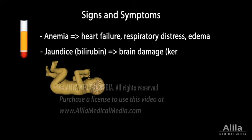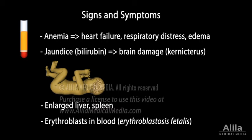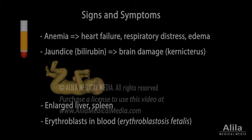Other signs of HDN include enlarged liver, spleen, and presence of immature red blood cells, erythroblasts, in the blood. Some of these signs can be detected before birth with ultrasound imaging.